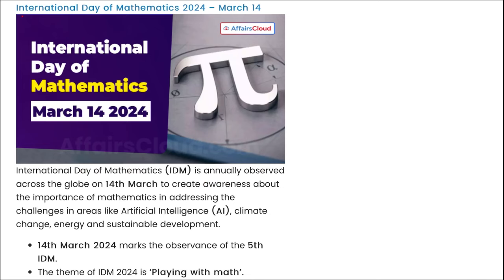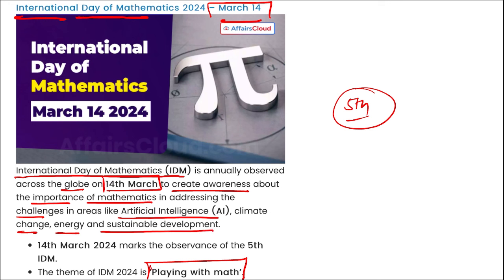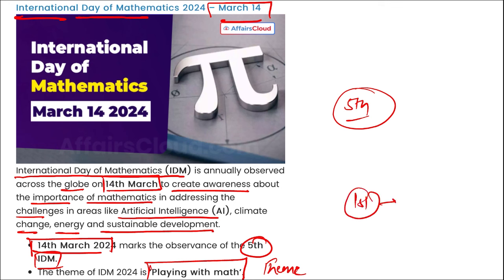The International Day of Mathematics was observed on 14th March. This was the 5th edition, with the theme 'Playing with Maths.' It was first observed in 2020. This day raises awareness about the importance of mathematics in areas like AI, climate change, energy, and sustainable development.